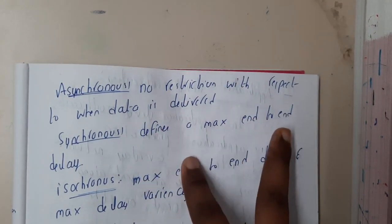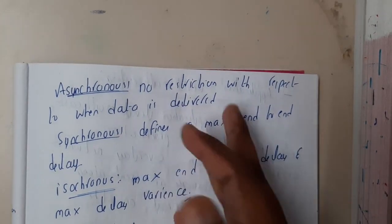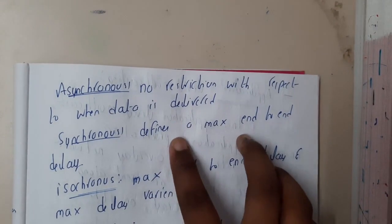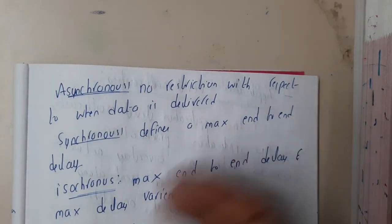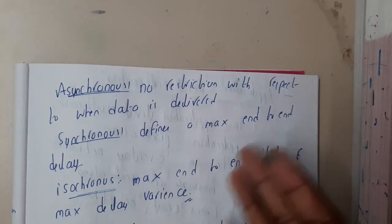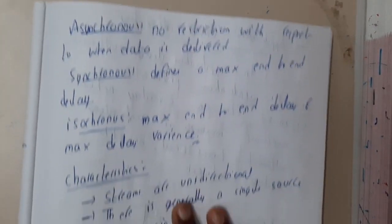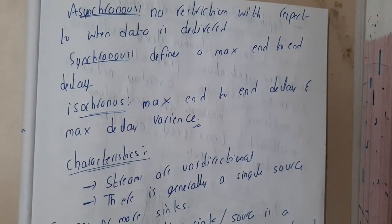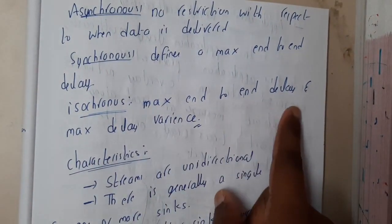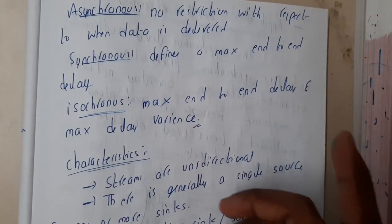In synchronous, there is a maximum time bound — for example, on YouTube you can set a live stream delay of one minute, so every time the stream delay will be exactly one minute, which could be around 0.5 seconds. That is synchronous. In isochronous, it is a combination of both — the maximum end-to-end delay and the maximum delay variance should also not exceed limits.